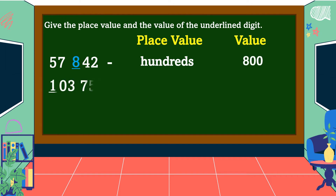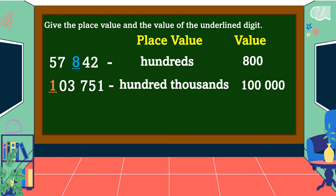Next number. The underlined digit is 1. What is the place value? You are right — it is hundred thousands. And the value? Very good — 100,000.